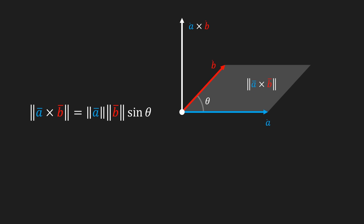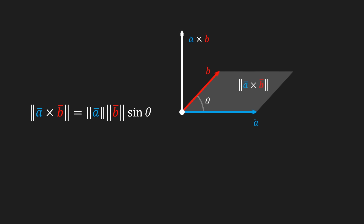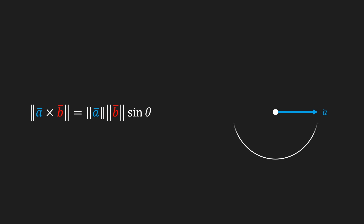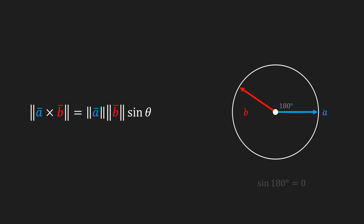According to this formula, the length of the cross product will become shorter if vector a or b get shorter. The cross product will also get shorter if the angle between a and b gets smaller. If the angle becomes zero degrees, then the sine of theta — the sine of zero degrees — will be equal to zero. The same goes for an angle of 180 degrees. This means that just like with the dot product, we can simplify this formula by saying that if a and b are parallel to each other, denoted with these two vertical bars, then the length of the cross product is going to be equal to zero.